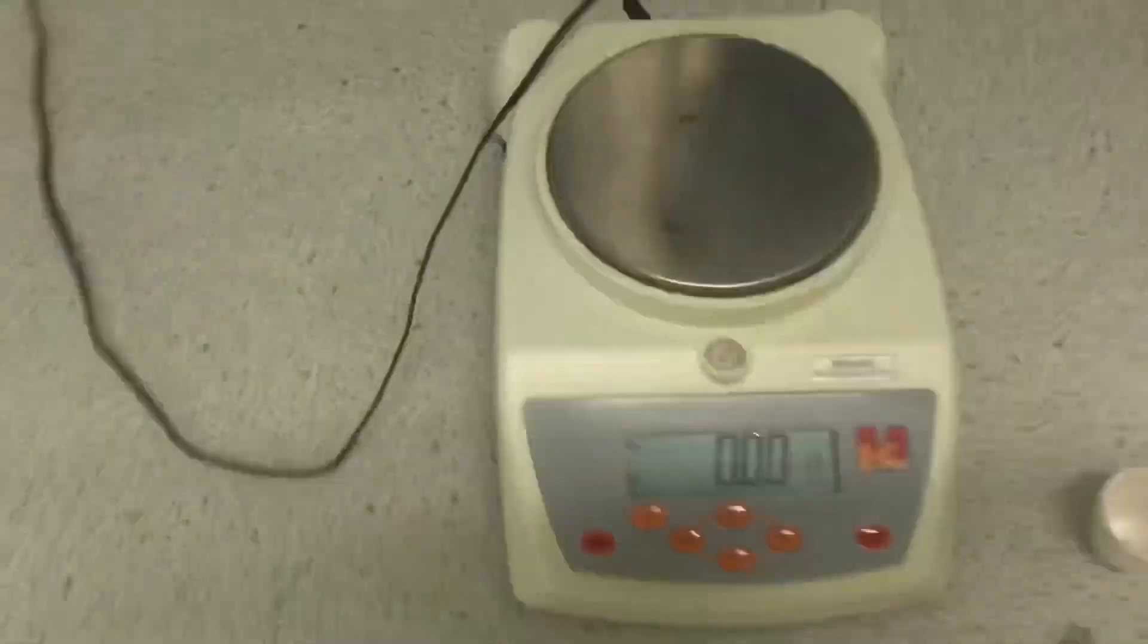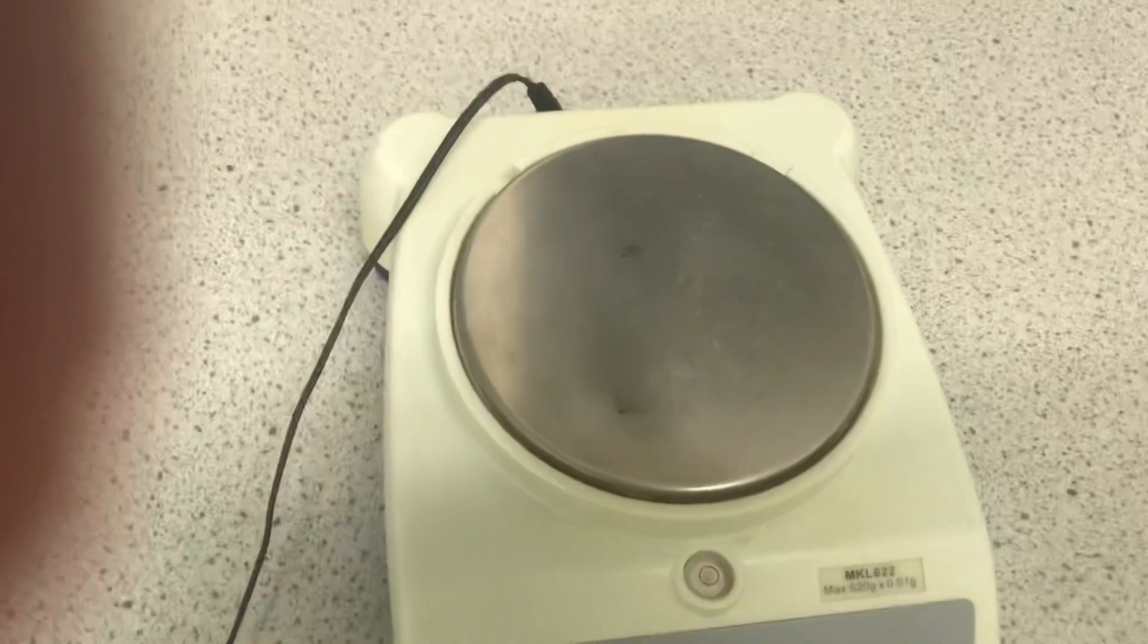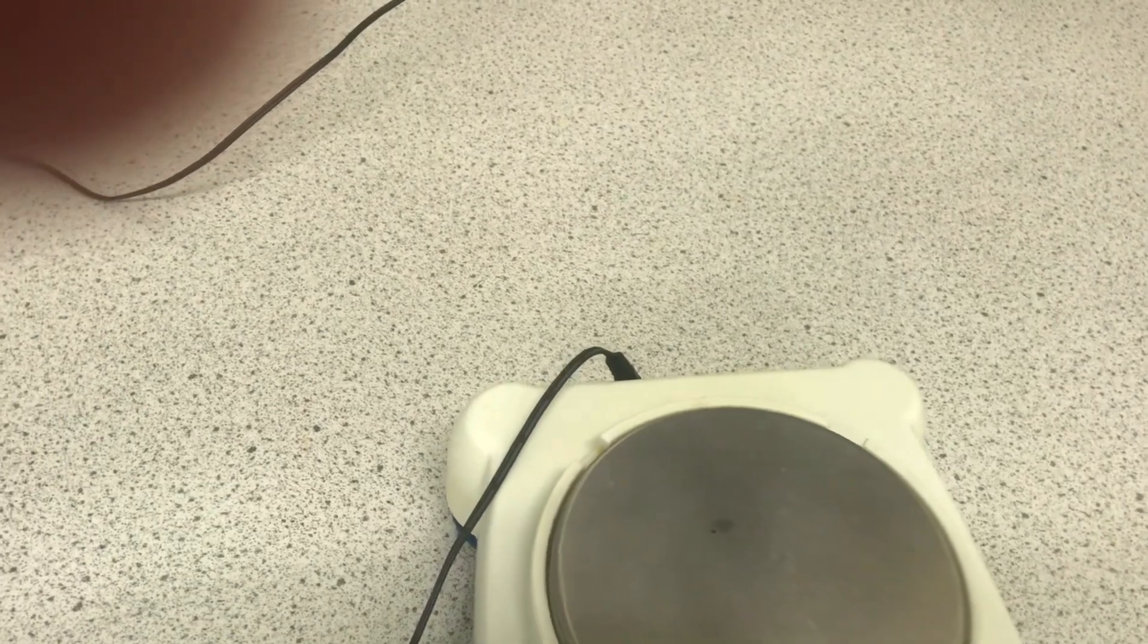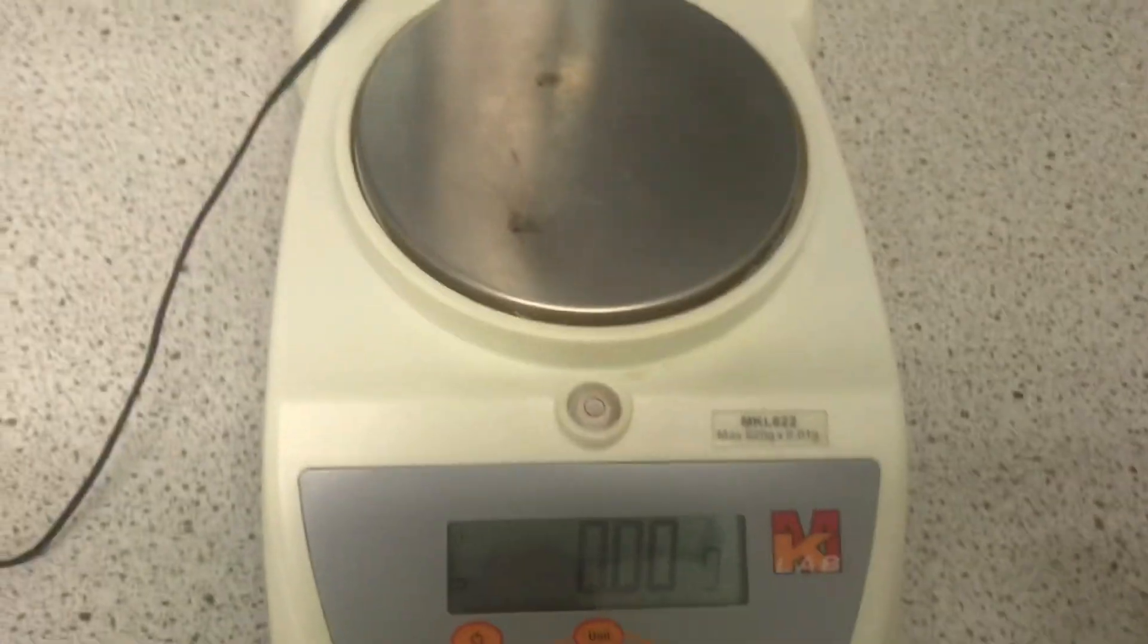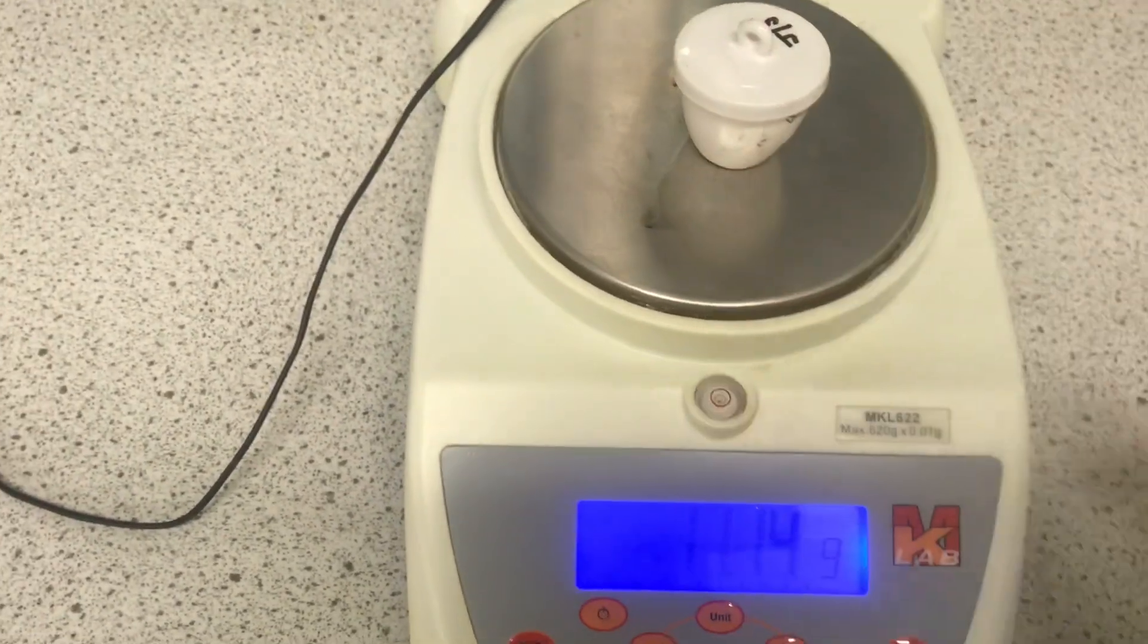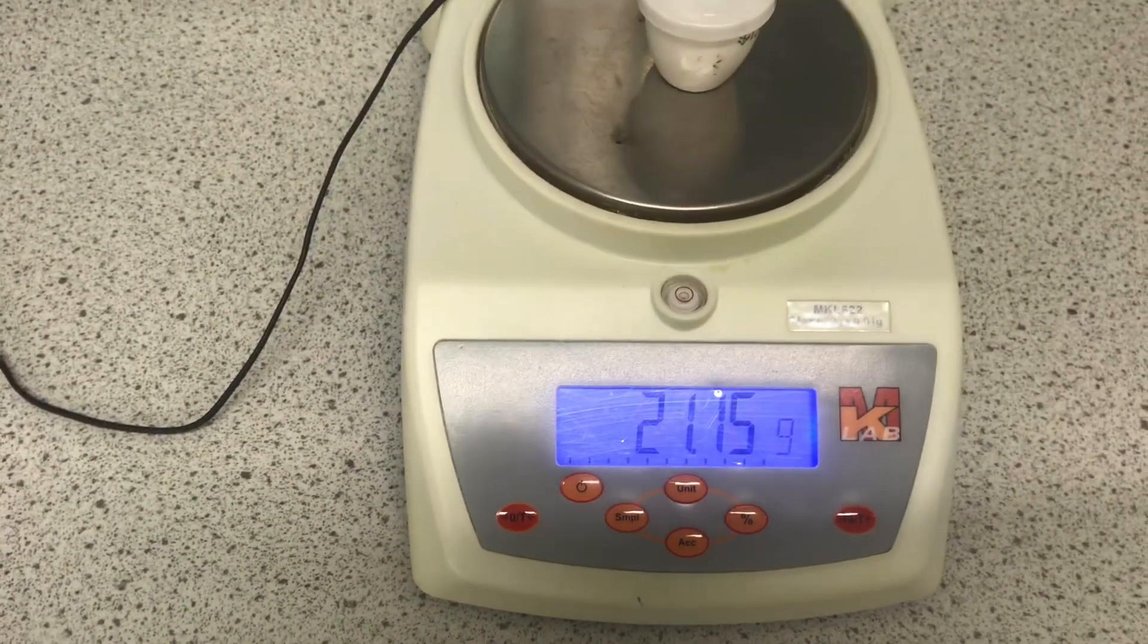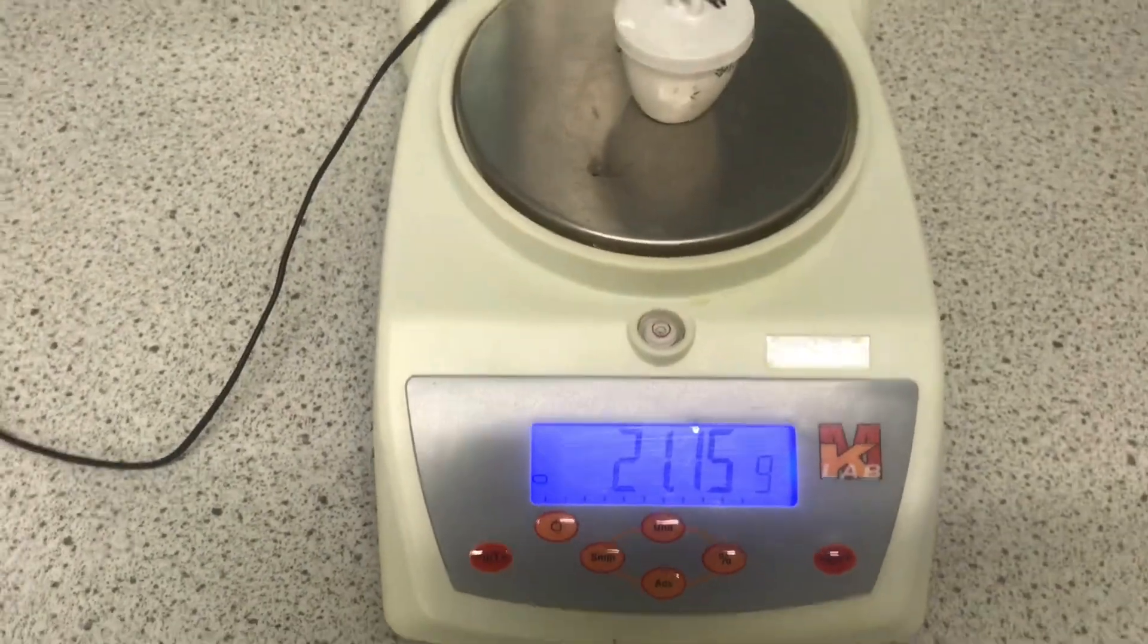My first step will be to determine the mass of my crucible along with the magnesium and its lid. So, I put the magnesium in my crucible, put the lid, now we'll place this on my scale to determine its mass. The mass is 21.15 grams.